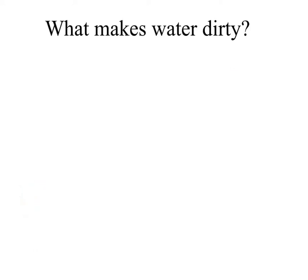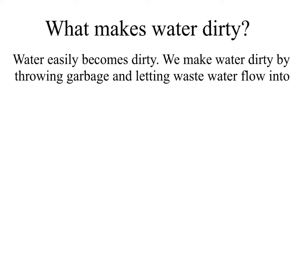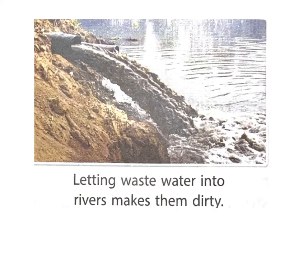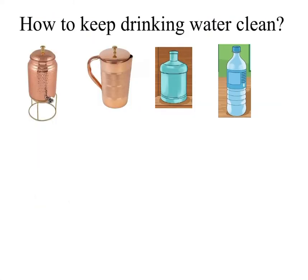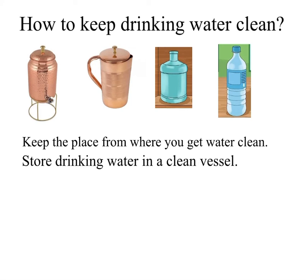What makes water dirty? Water easily becomes dirty. We make water dirty by throwing garbage and letting waste water flow into rivers, lakes, and ponds. Dirty water is unfit for drinking. Letting waste water into rivers makes them dirty.